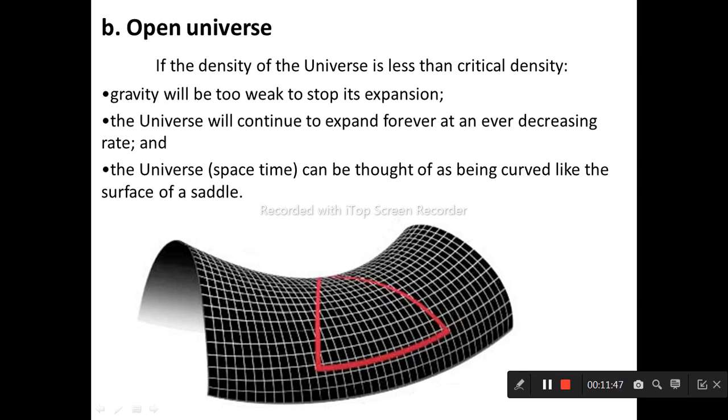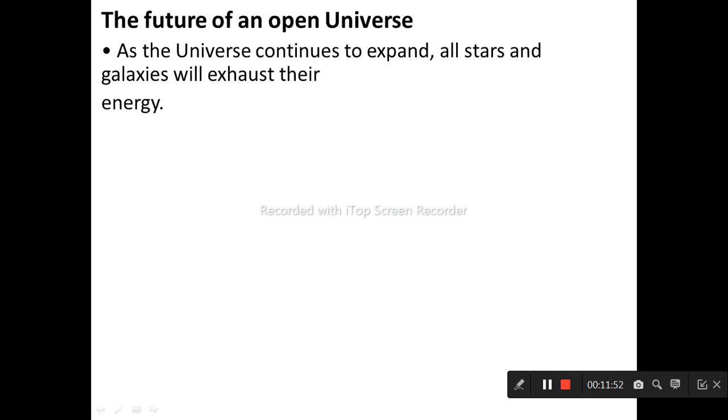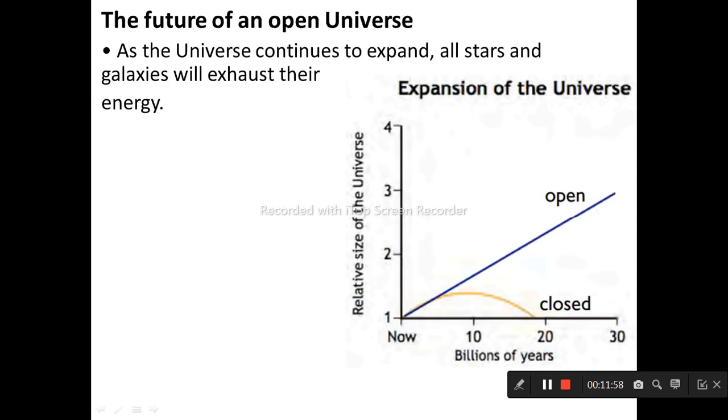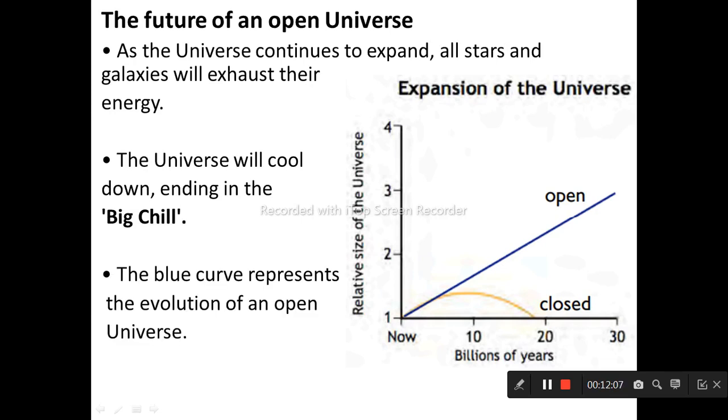As the universe continues to expand, all stars and galaxies will exhaust their energy. The universe will cool down, ending in a Big Chill. The blue curve represents the evolution of an open universe.